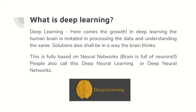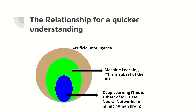This is fully based on neural networks, and our brain is the source of all these. The brain is full of neurons, and we will also understand how our neurons work a little later in the same session. People also call deep learning as deep neural learning or deep neural networks. The relationship must be understood and the hierarchy should be visible: artificial intelligence is the bigger basket, machine learning is the first subset of AI, and deep learning is the further subset of ML where the neural network tries to mimic the human brain.